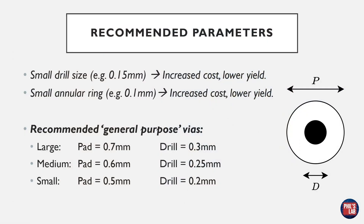It's difficult to give general via diameters that should always be used — it really depends on the scenario. A small drill size, such as 0.15mm or less than 0.2mm, typically increases PCB cost and lowers yield — maybe only 90% of PCBs manufactured will work due to defects. The same applies to a small annular ring like 0.1mm. As a general-purpose starting point: large via — 0.7mm pad, 0.3mm drill; medium — 0.6mm pad, 0.25mm drill; small — 0.5mm pad, 0.2mm drill. You may need larger or smaller depending on the scenario.